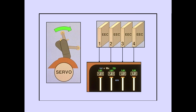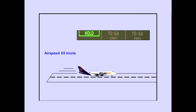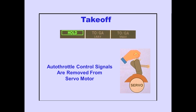The electronic engine controls, or EECs, then adjust each engine to attain the selected thrust setting. The EEC is discussed in the power plant modules. As airspeed reaches 65 knots, throttle hold engages. When throttle hold is active, hold is displayed on the PFDs, and autothrottle control signals are removed from the thrust lever servo motor. During the remainder of the takeoff, thrust can be manually adjusted by the flight crew if necessary.